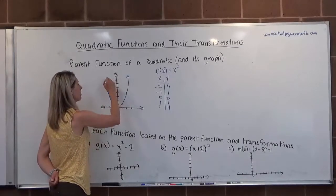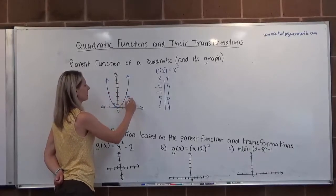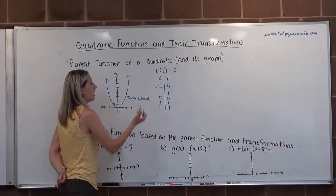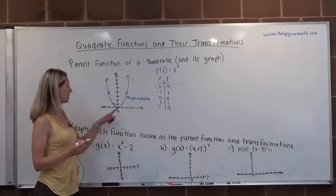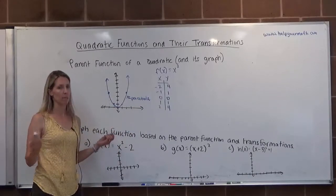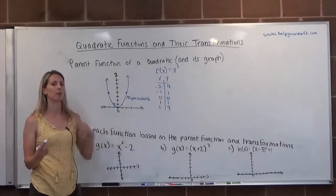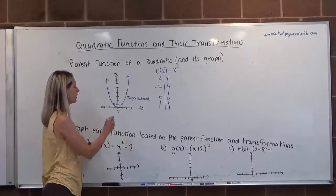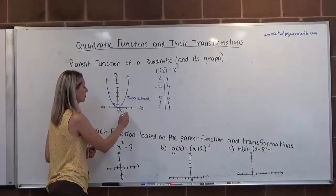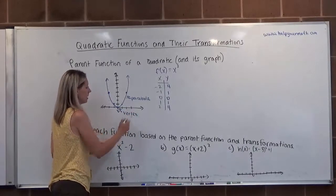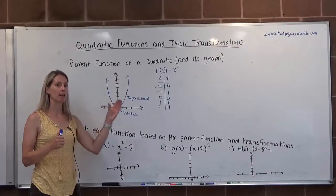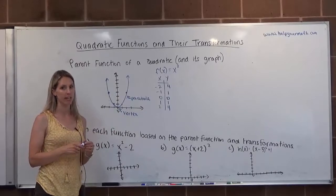So like I said, this is a u-shape. The name of this graph is called a parabola. Every parabola will have either a bottom point, a minimum, or if it's upside down, it will have a maximum. That point that's either the lowest point or the tallest point is called the vertex.